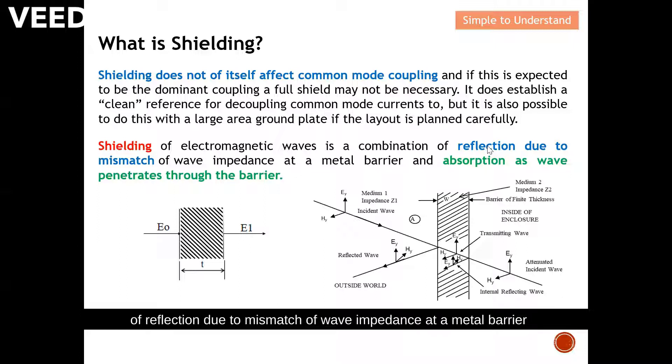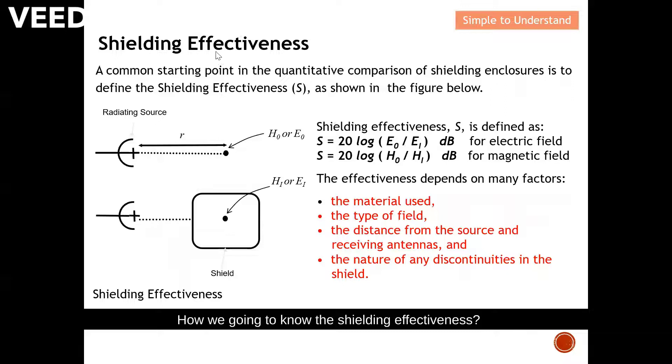The shielding of electromagnetic waves is a combination of reflection due to mismatch of wave impedance at a metal barrier and absorption as waves penetrate through the barrier. The electromagnetic wave penetrates through the conductive material and is absorbed, and a lesser amount will be able to leave this metallic enclosure. There is also another method called multiple reflection.